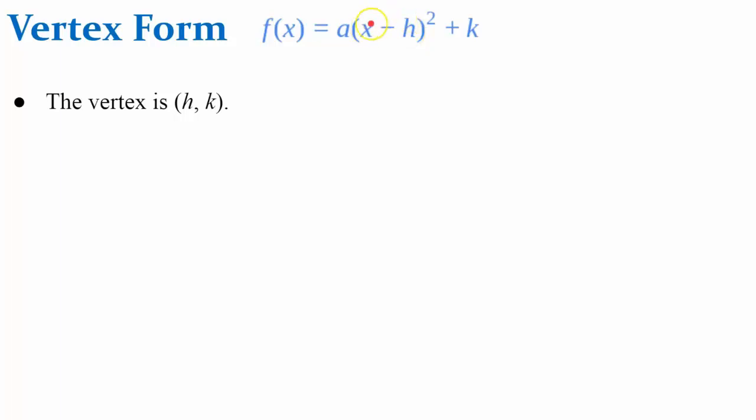If this were x plus 2, then h would be negative 2. k has a positive or negative value depending what operation precedes it. h is the opposite because it's subtract h.